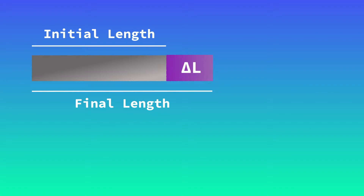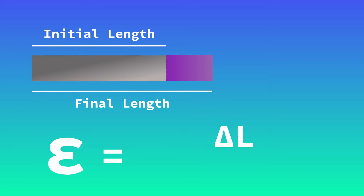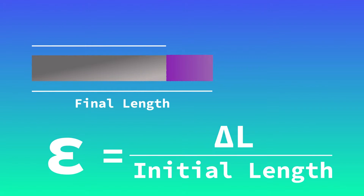The change in length, or delta L, can be used to actually determine the strain in the material. Strain, which is commonly represented by the symbol epsilon, is defined as the change in length (delta L) divided by the initial length. This value gives you a percentage of elongation in the material due to an applied force.